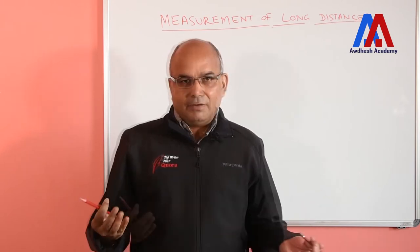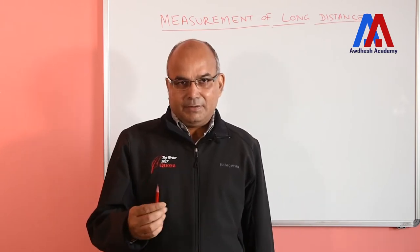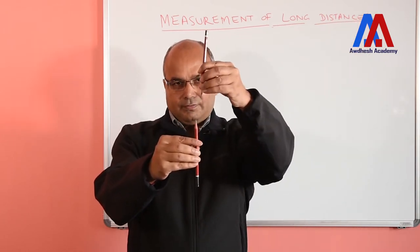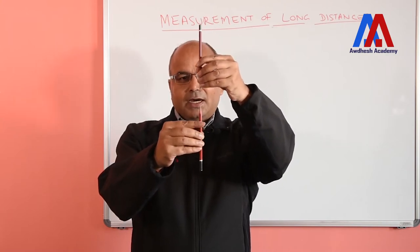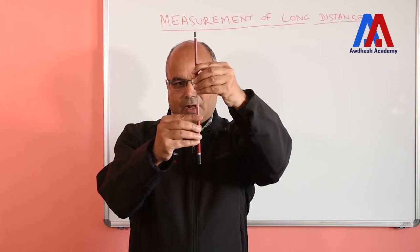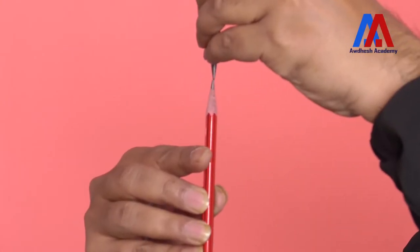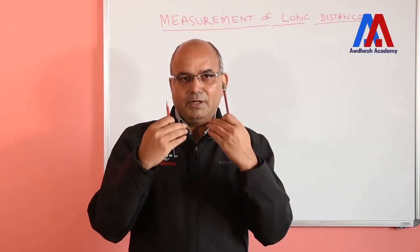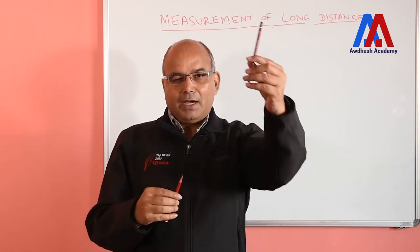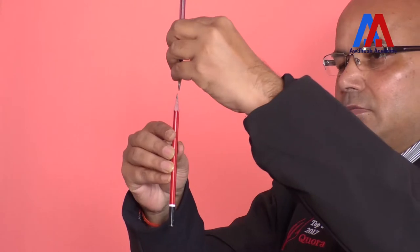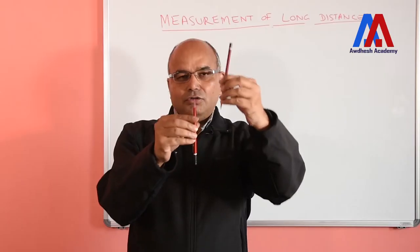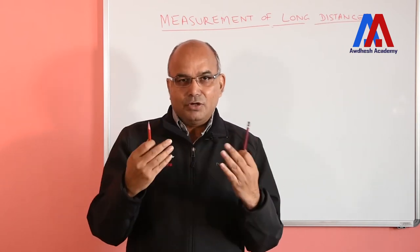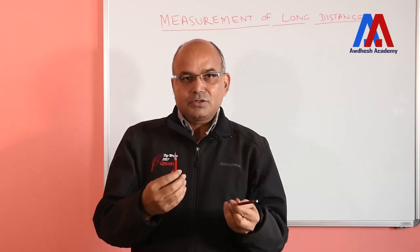Let us try a very interesting experiment. I am taking two pencils. With both eyes open, I want to place one on top of the other, and I can easily do it. It is very easy because I can measure the depth since both my eyes are measuring its position and my brain is able to assess the depth. Now I am closing one eye and trying to do the same thing again. However best I try, I am unable to do it, because with one eye I cannot see the depth.